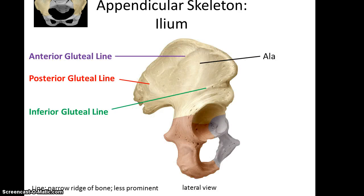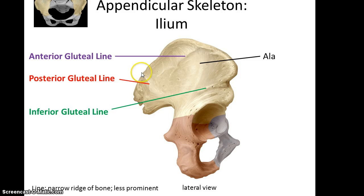Taking a lateral view — where you see where the femur attaches to the hip bone — you can see the ala, which is a flared-out area of the ilium, as well as the posterior gluteal line, anterior gluteal line, and inferior gluteal line. These names are again trying to give you directions for where to find these very faint surface markings.